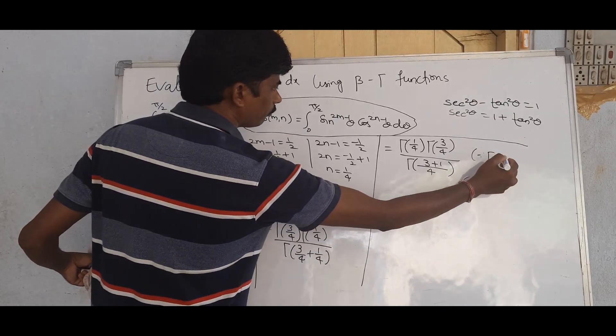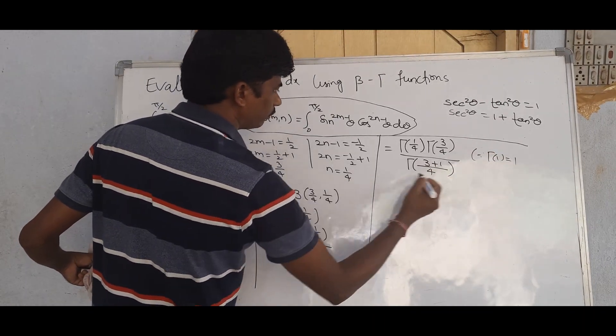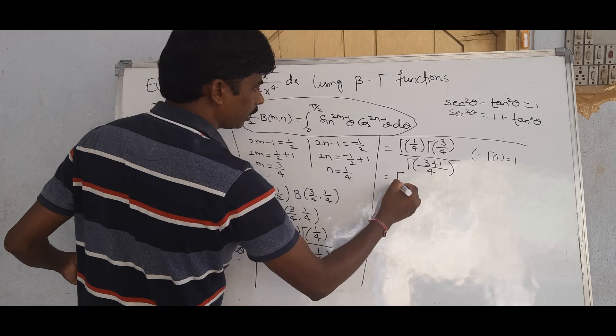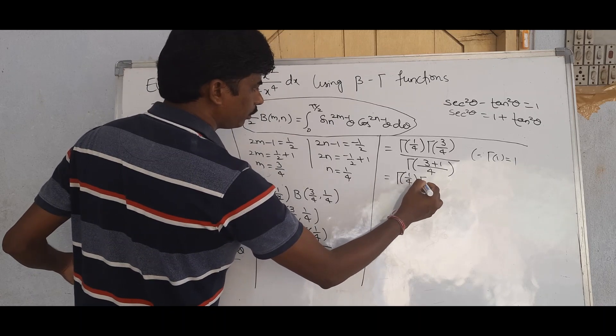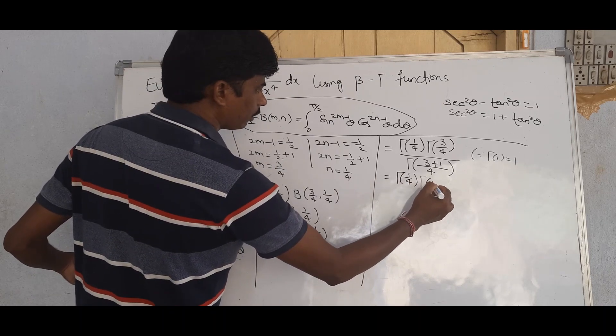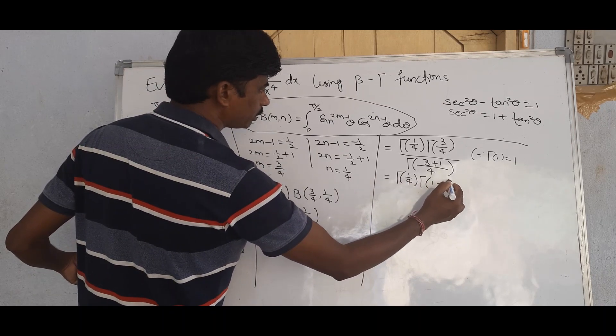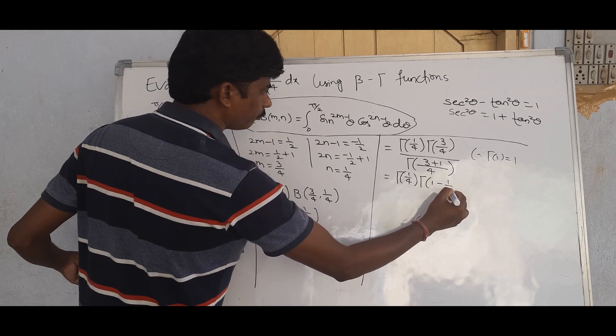Γ(1) equals 1. Now applying the reflection formula Γ(n)·Γ(1 − n) = π / sin(nπ), with n = 1/4, we get Γ(1/4)·Γ(1 − 1/4).